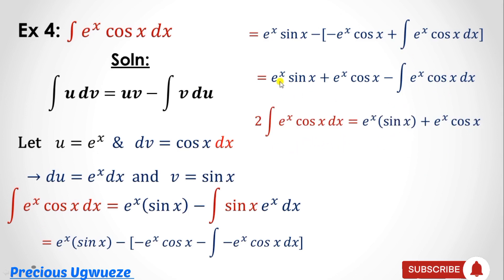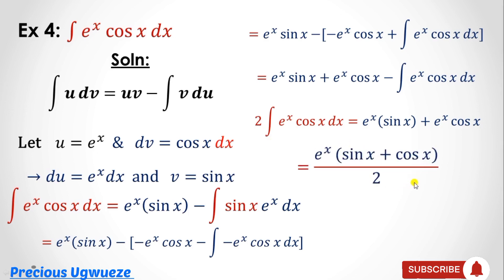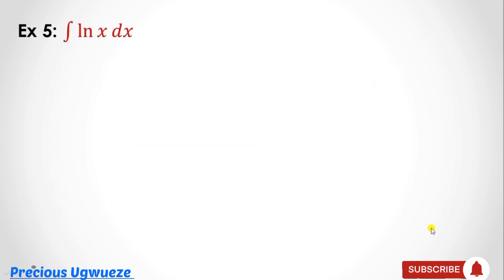The right-hand side now has eˣ·sin(x) + eˣ·cos(x). Dividing both sides by 2 gives the final solution: ∫eˣ·cos(x)dx = (eˣ/2)·(sin x + cos x) + C. You can also write this as eˣ(sin x + cos x)/2 + C.